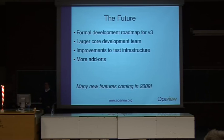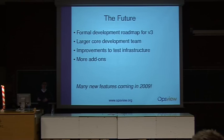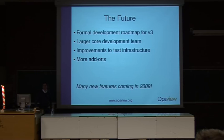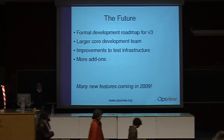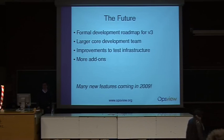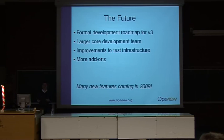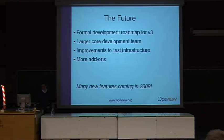In terms of the future for OpsView version 3, we've developed a more formal process for putting a roadmap in place covering the next 12 months. We have a larger core development team and expect it to get bigger. We've been improving our test infrastructure to make sure we're testing code properly before releases, and we expect further improvement. There'll also be more add-ons — we already have SMS gateways, help desk integration tools, and reporting tools, and we expect those to develop further over the next year.